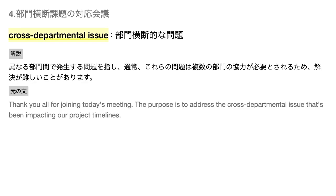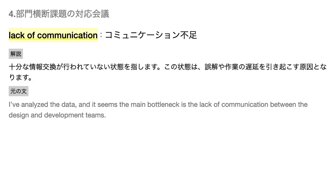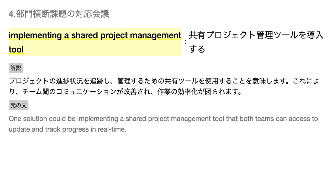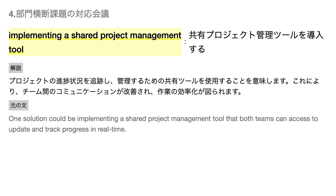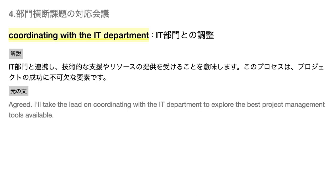Cross-departmental issue — 異なる部門間で発生する問題を指し、通常、これらの問題は複数の部門の協力が必要とされるため、解決が難しいことがあります。Lack of communication — 十分な情報交換が行われていない状態を指し、この状態は、誤解や作業の遅延を引き起こす原因となります。Implementing a shared project management tool — プロジェクトの進捗状況を追跡し、管理するための共有ツールを使用することを意味します。これにより、チーム間のコミュニケーションが改善され、作業の効率化が図られます。Regular cross-departmental meetings — 異なる部門のメンバーが定期的に集まり、情報交換や問題解決を行う会議のことです。Coordinating with the IT department — IT部門と連携し、技術的な支援やリソースの提供を受けることを意味します。